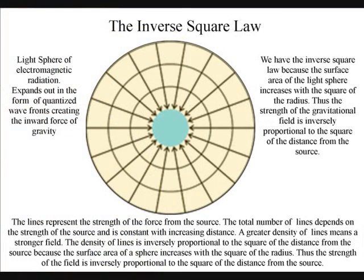We have the inverse square law because the surface area of the light sphere increases with the square of the radius. Thus, the strength of the gravitational field is inversely proportional to the square of the distance from the source.